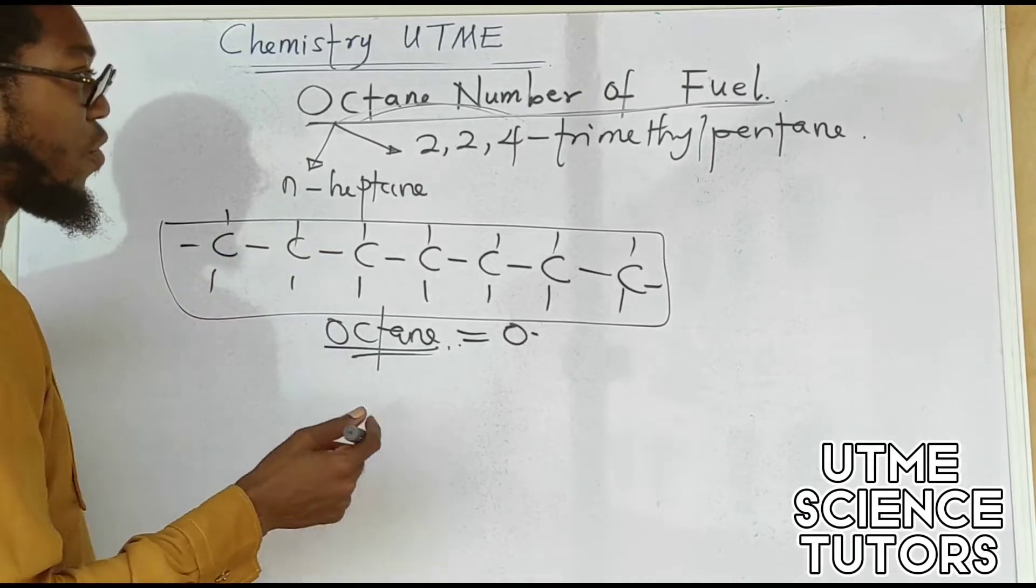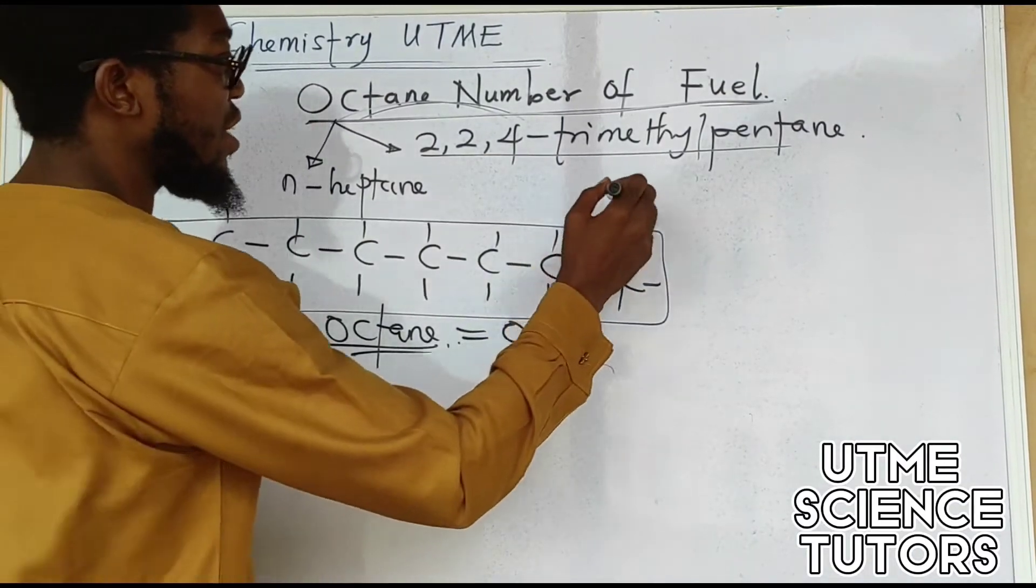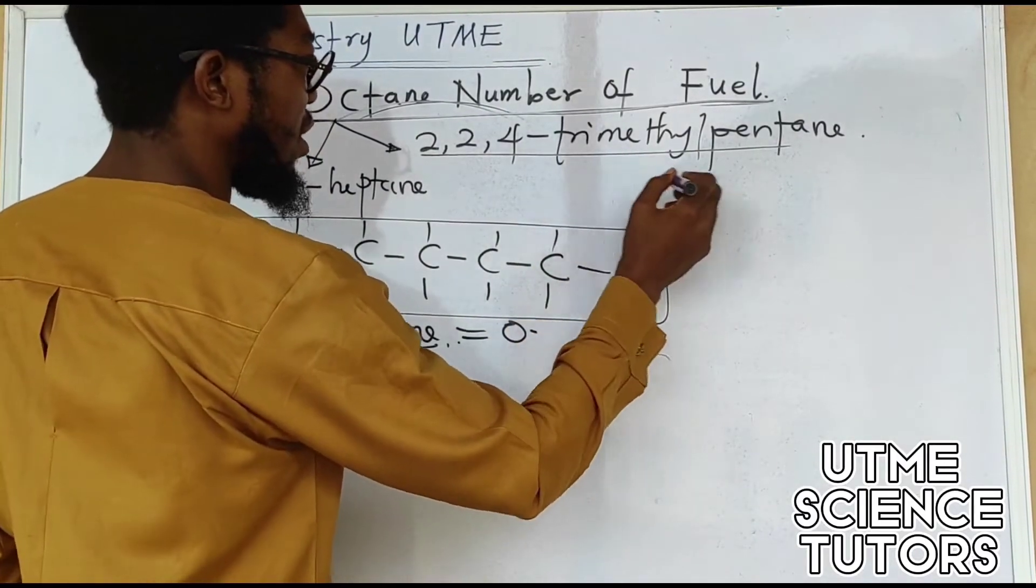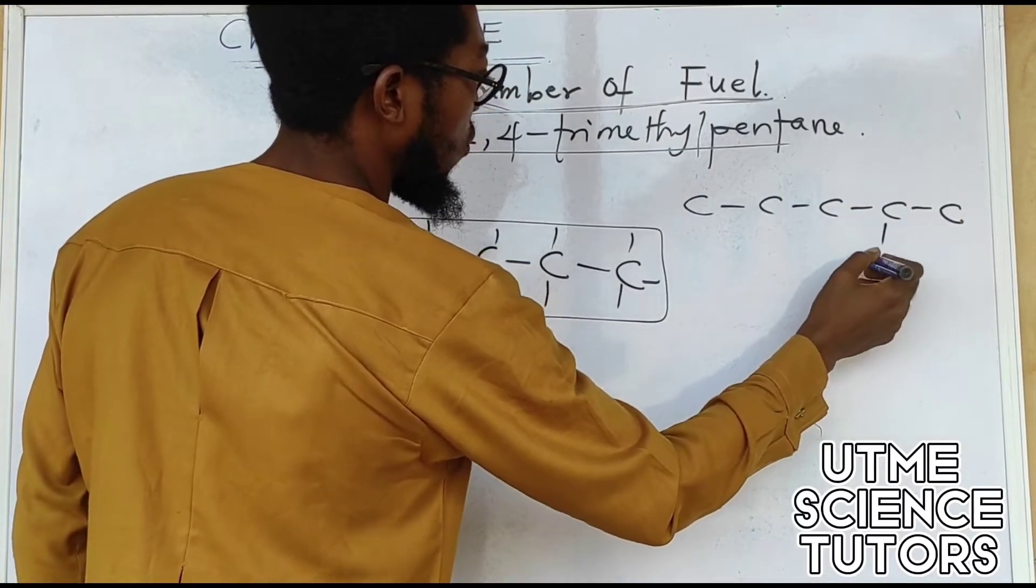But a fuel that contains 2,2,4-trimethylpentane is the best petrol. The structure is one, two, three, four, five.